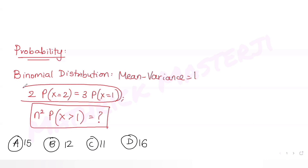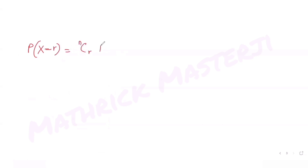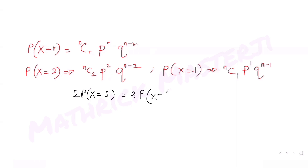We've also been given that 2 times P(X=2) equals 3 times P(X=1). For binomial distribution, P(X=r) equals nCr times p raised to r times q raised to n minus r. So P(X=2) becomes nC2 · p² · q^(n−2), and P(X=1) becomes nC1 · p · q^(n−1). Substituting into the given condition: 2 times nC2 · p² · q^(n−2) equals 3 times nC1 · p · q^(n−1).